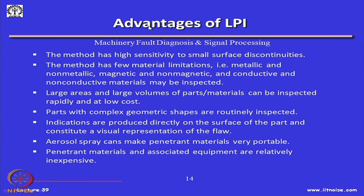Advantages of liquid penetrant inspection: the method has high sensitivity to small surface discontinuities which was not the case with eddy current or ultrasonics. The method has few material limitations — metallic, non-metallic, magnetic, non-magnetic, conductive, and non-conductive materials may all be inspected. Large areas and volumes of parts can be inspected rapidly and at low cost. Parts with complex geometry are routinely inspected, indications appear directly on the surface, aerosol spray cans make penetrant materials very portable, and the materials and equipment are relatively inexpensive.